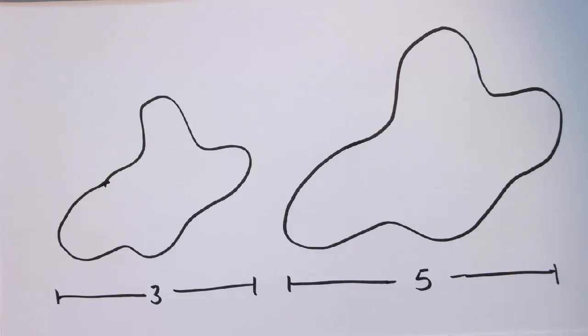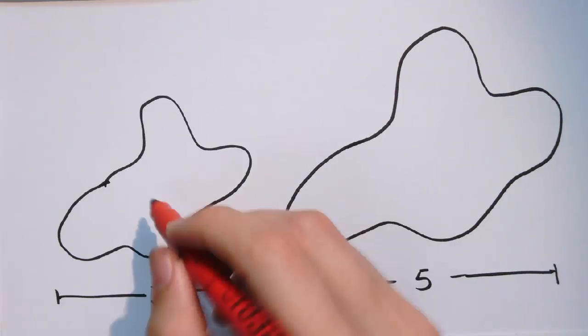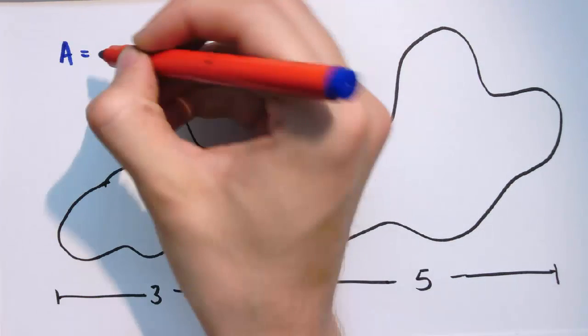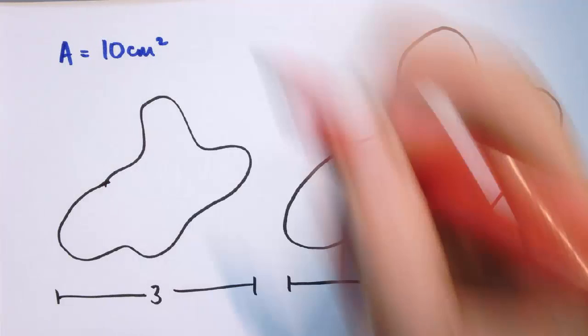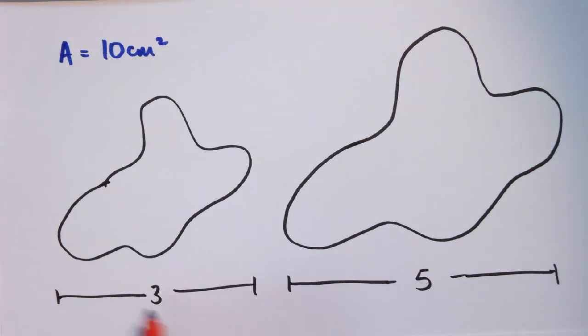It doesn't just apply to neat shapes with nice geometrical formulas like those ones. It's any two shapes that are similar. Now I haven't managed to draw these two shapes exactly similar here, but it will give you the idea. So if the shape on the left had an area of 10 cm squared, we've got the length scale factor because we've got an equivalent length here of 3 and 5 from one side of the shape to the other.